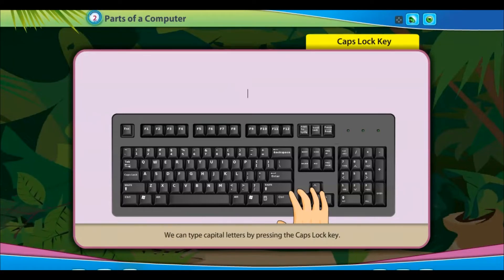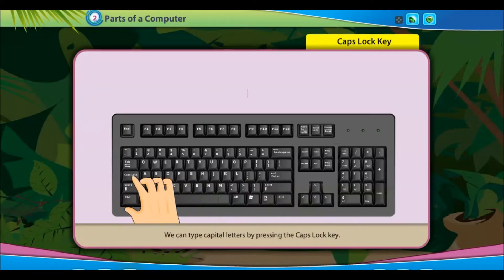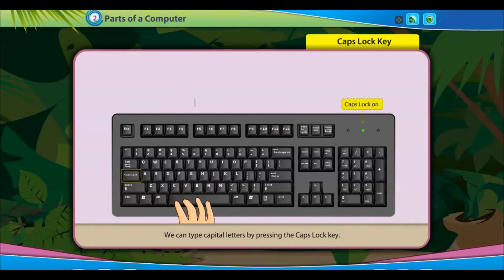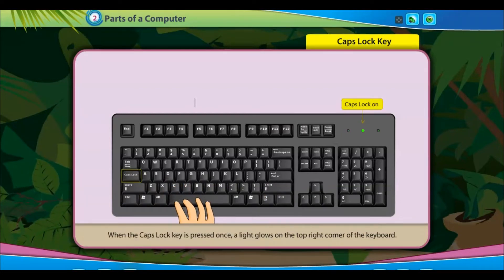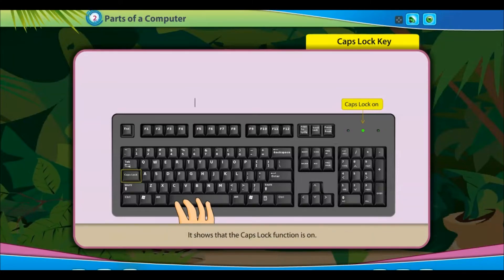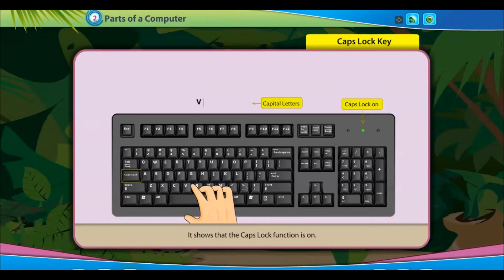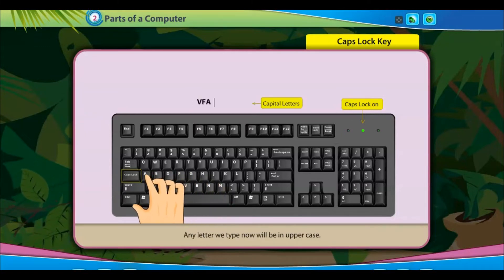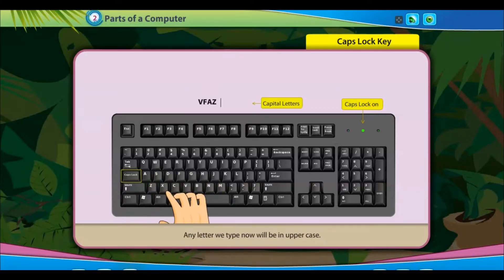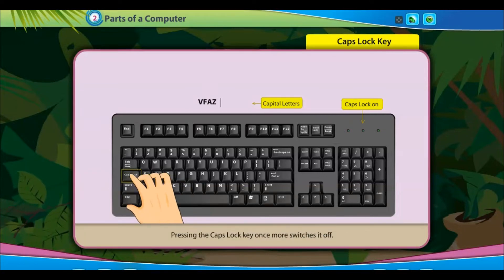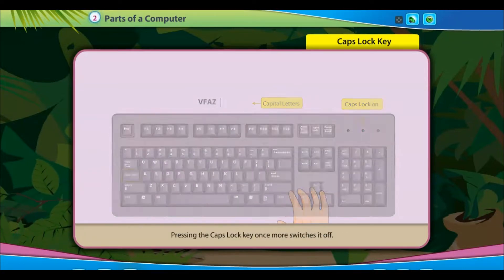We can type capital letters by pressing the caps lock key. When the caps lock key is pressed once, a light glows on the top right corner of the keyboard, showing that the caps lock function is on. Any letter we type will then be in uppercase. Pressing the caps lock key once more switches it off.